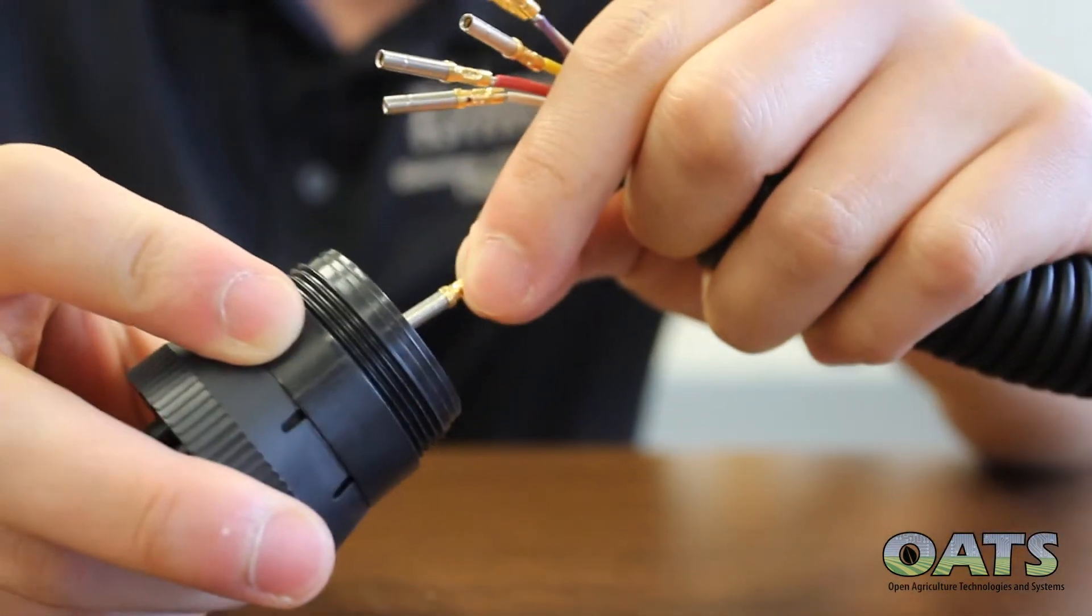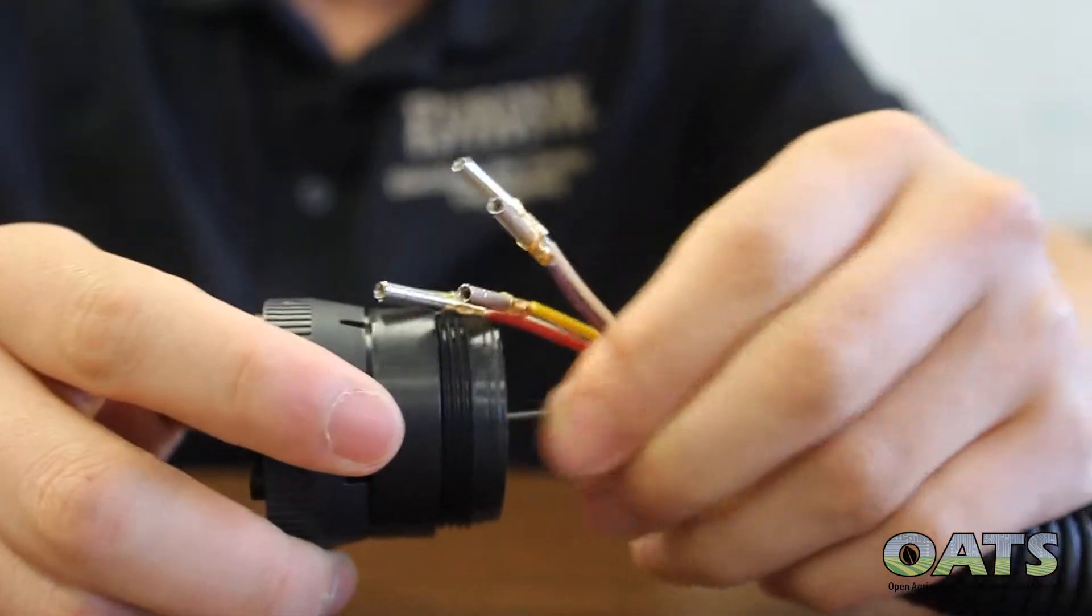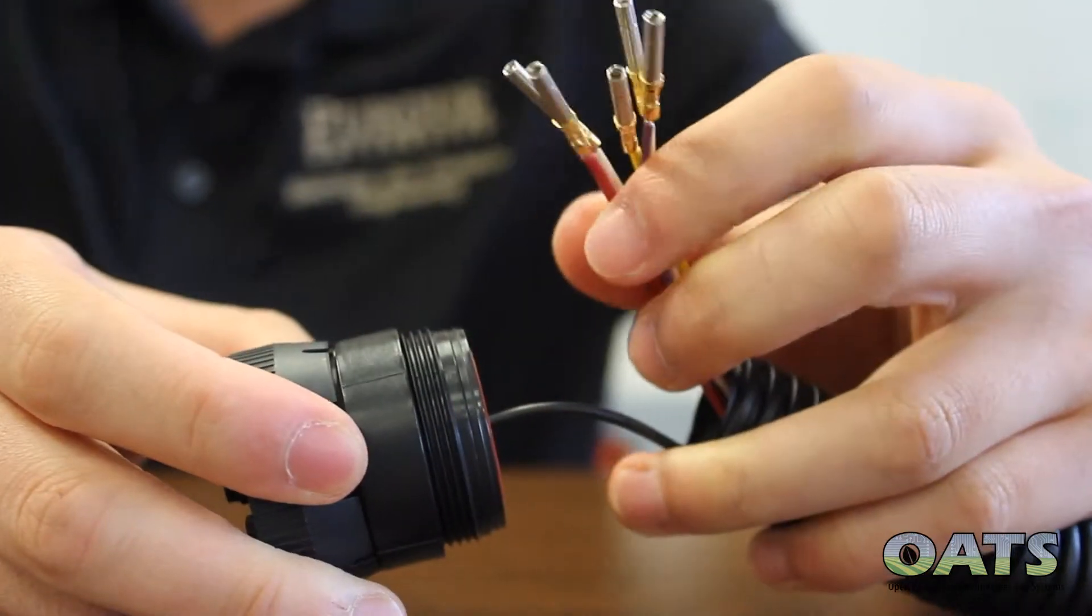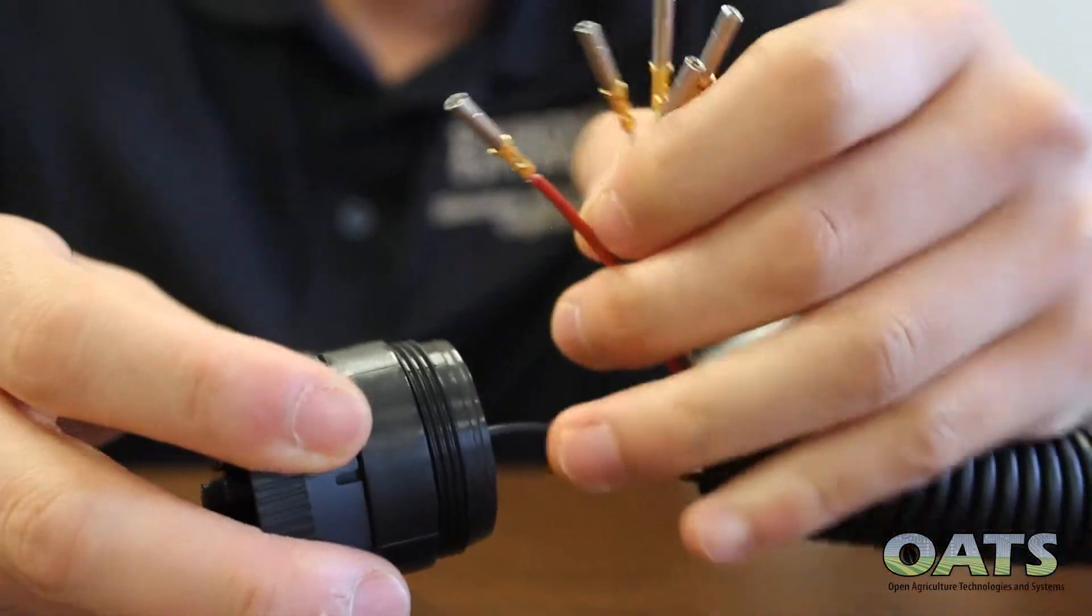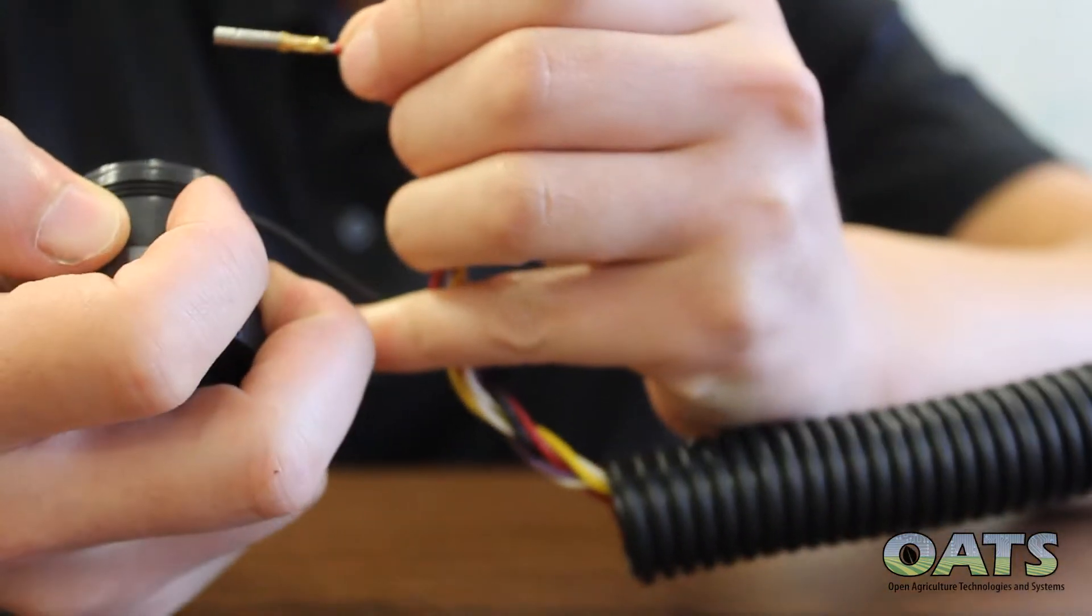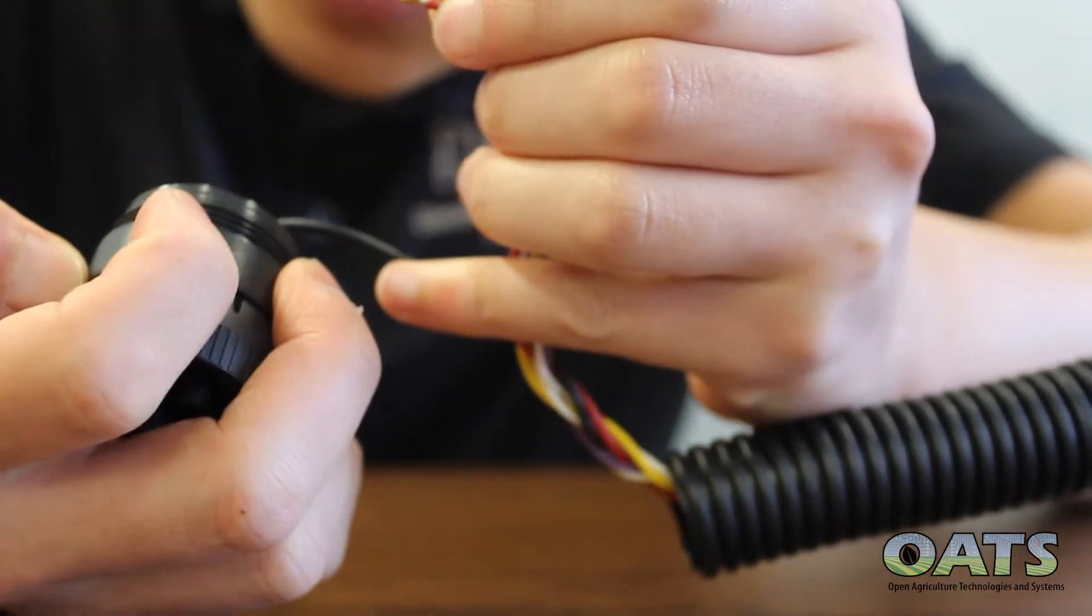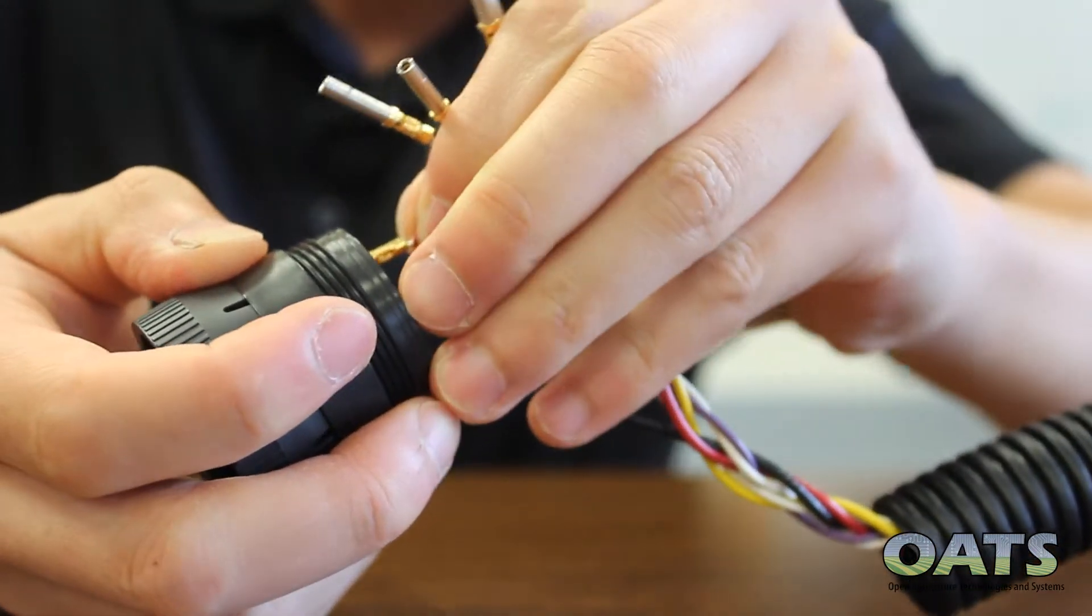As we are using white color for both the tractor bus and implement bus CAN load, make sure that you don't mix these two connections up while inserting the female pins onto the isobus female ports.